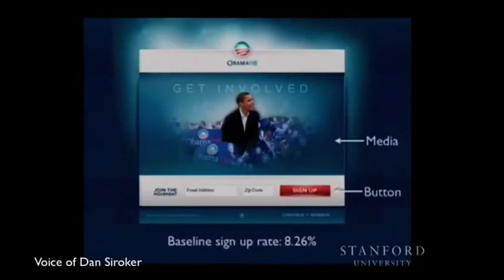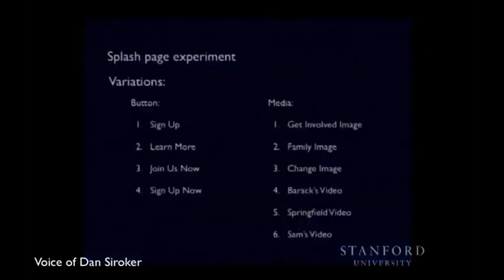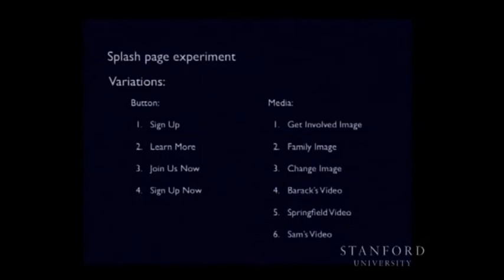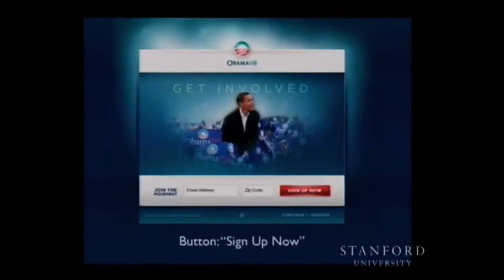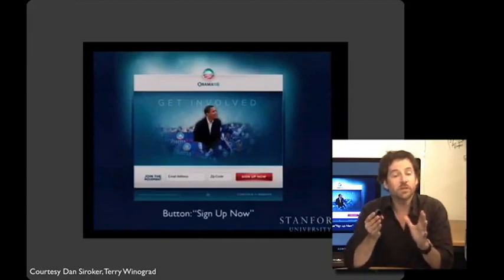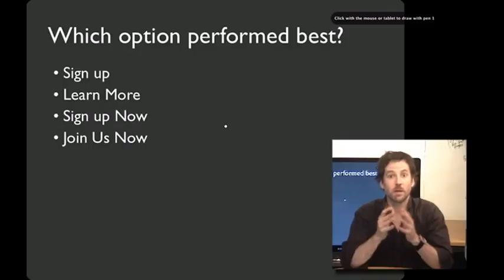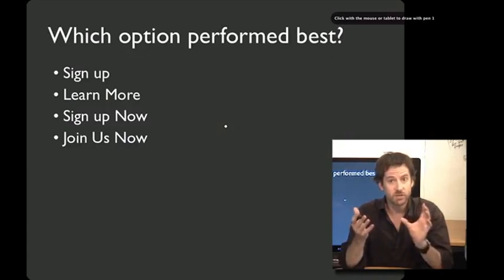They did a multivariate test — trying variations of two different parts of the page. They tested different kinds of media at the top of the page and different kinds of buttons. Their baseline sign-up rate was 8.26%. They had four different buttons — 'sign up,' 'learn more,' 'join us now,' and 'sign up now' — and six different media options: three images and three videos. The only thing changing between button variants is the text, and the dependent variable is how many people click that button. Dan found a pretty significant difference in sign-up rates for these four small changes in button language.